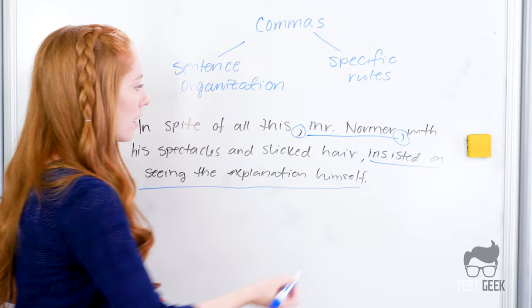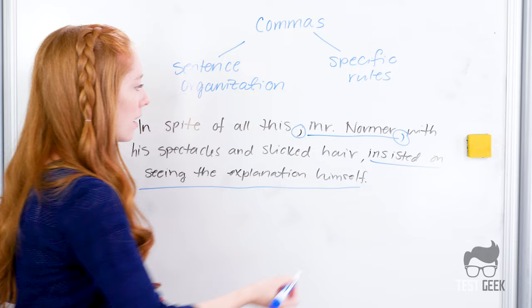In spite of all this, comma, Mr. Normer, so we need to add a comma here, with his spectacles and slicked hair, comma, insisted on seeing the explanation himself. Okay, so we need three commas here in order to make this one correct. So our answer will be C. Now we can take a look at the practice questions for the comma section.